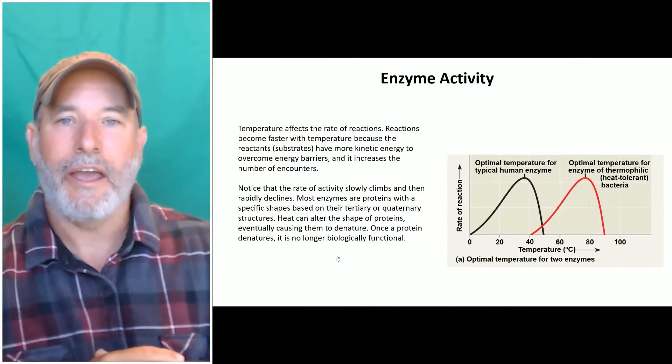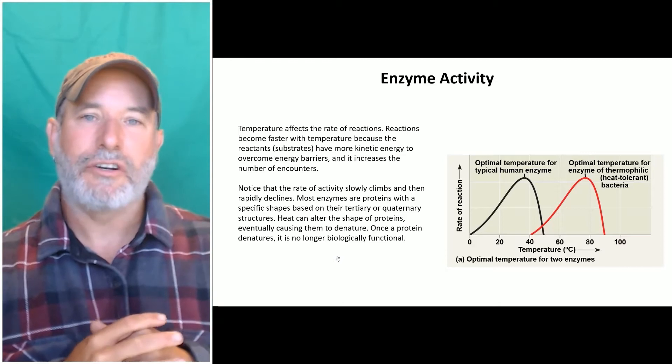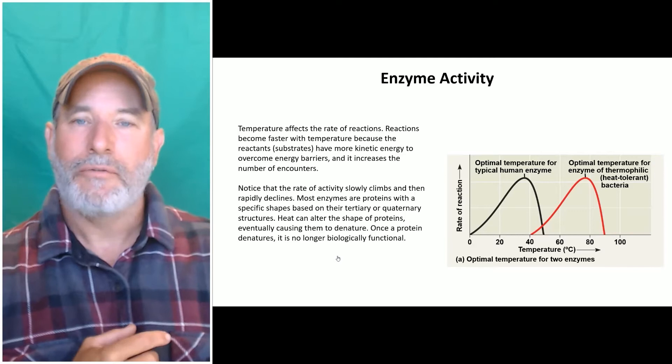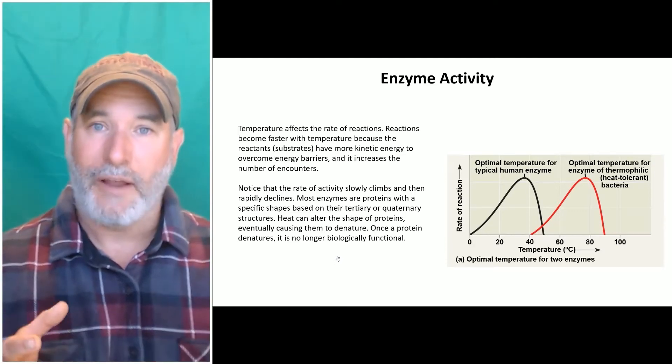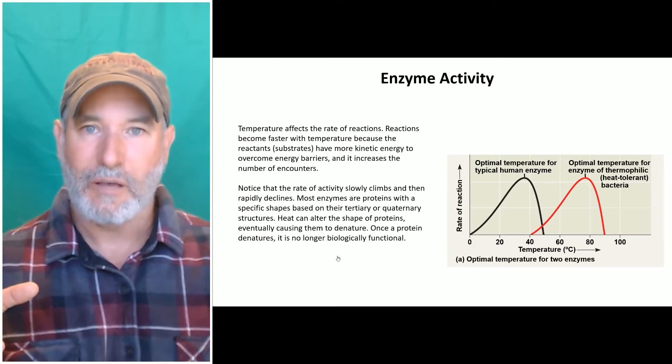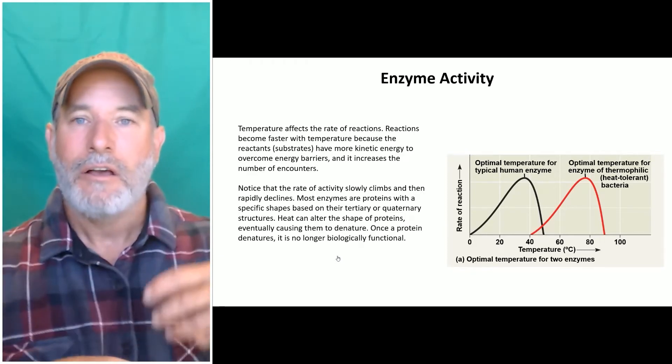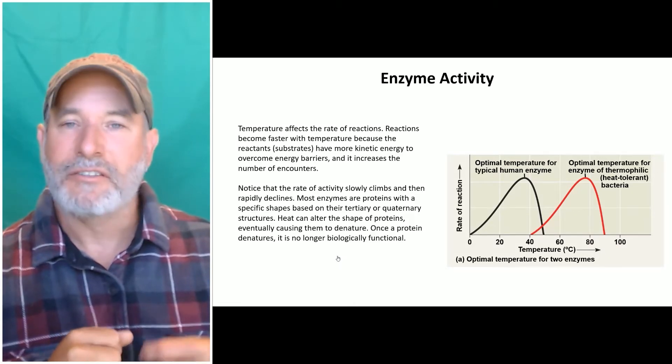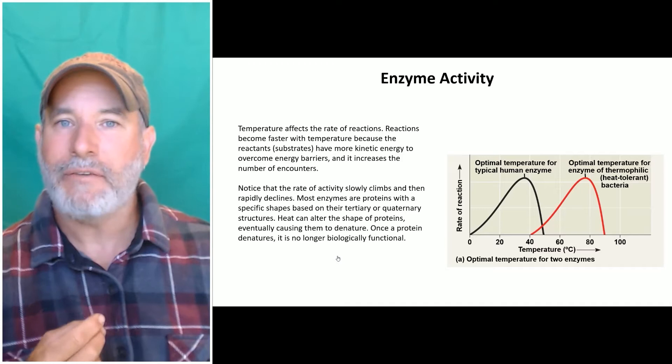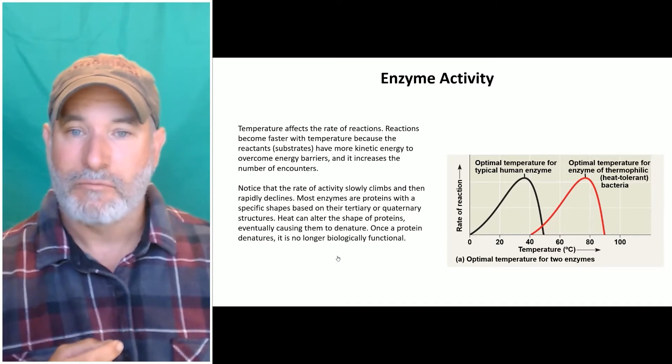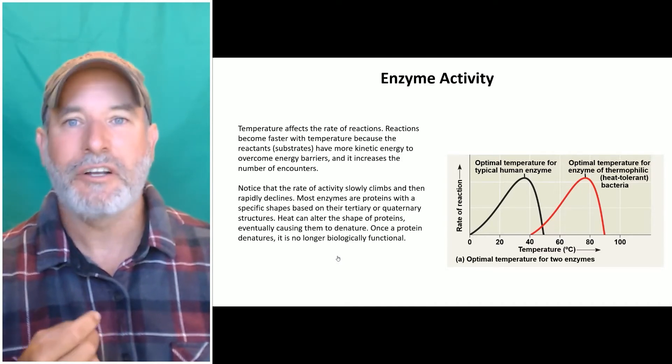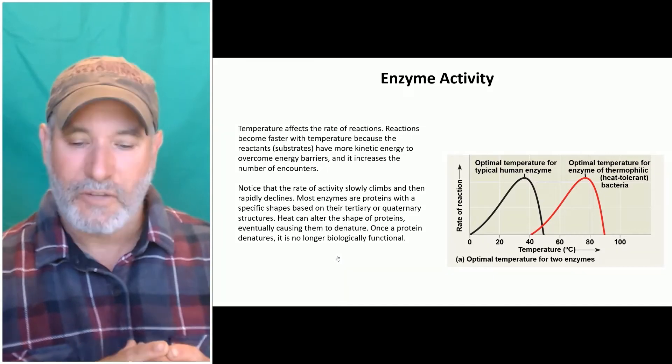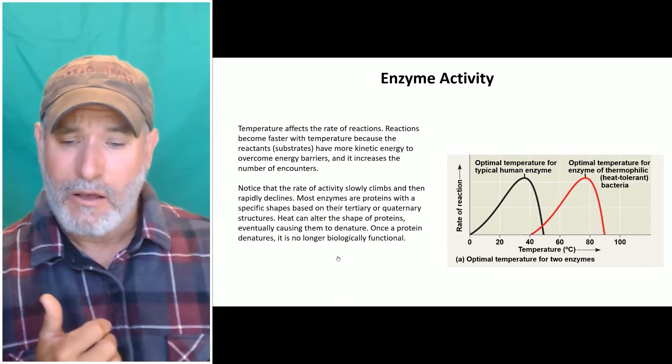Okay, now enzyme activity. This chart shows you something very important: temperature is incredibly important for enzyme activity. For a reaction to happen, the substrates have to come together. When you heat something up, you have more kinetic energy - these things are moving around faster, so the rate of encounter increases. Since they're moving faster with more kinetic energy, they're more likely to hit hard enough to break the bonds and form new chemicals.